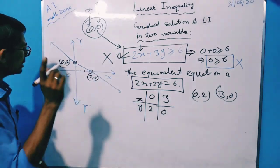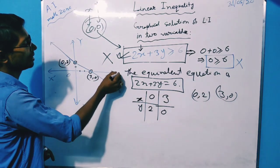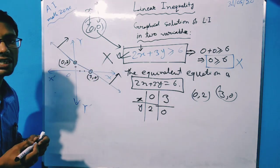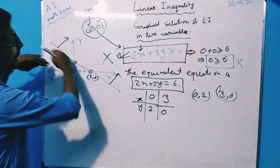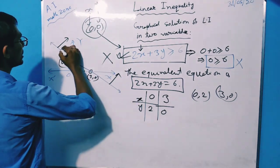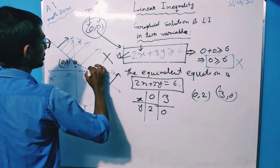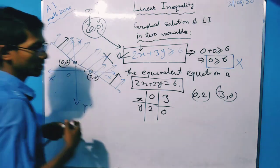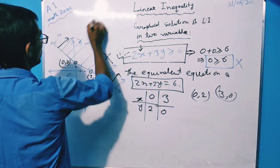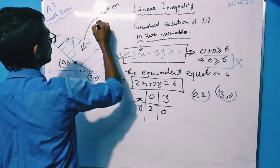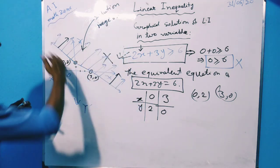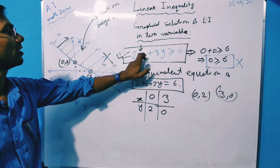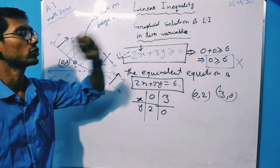Since the point (0, 0) is not satisfying the inequality, this direction — the lower side where the origin lies — will not be the solution region. The solution region will be the upper side of the line. This whole upper side of the line is the solution region for the given linear inequality 2x plus 3y is greater than or equals to 6.